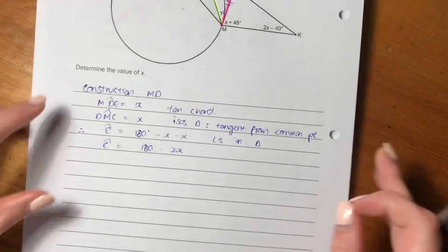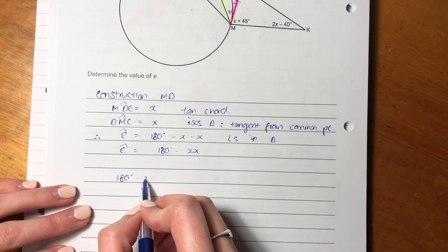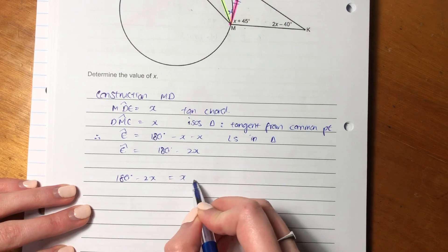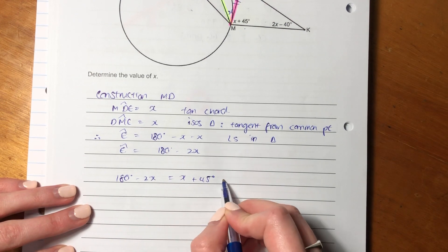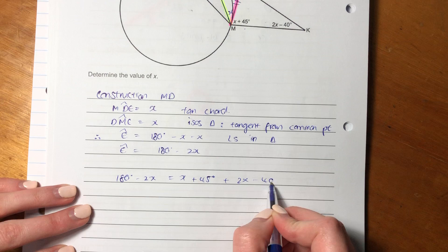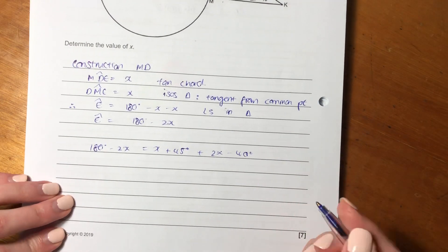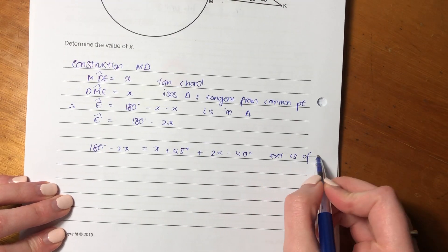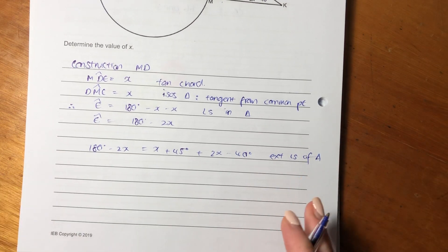So we're going to say 180 minus 2X equals X plus 45 plus 2X minus 40. And we're going to say here exterior angles of a triangle. Remember to always put in your reasons.